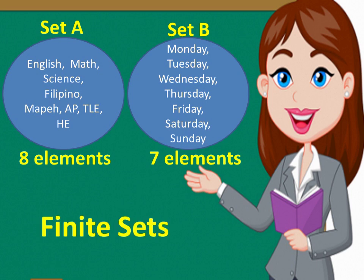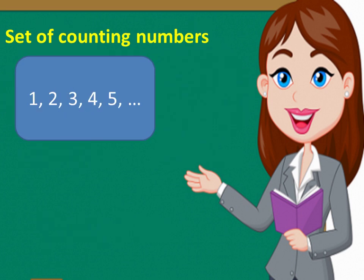Next example. Set of counting numbers. We all know that counting numbers start from 1. So, 1, 2, 3, 4, 5, 6, 7, 8, 9, and so on. The three dots that you can find in the set is what we call the ellipses. Ellipses indicate that the set continues in that pattern.